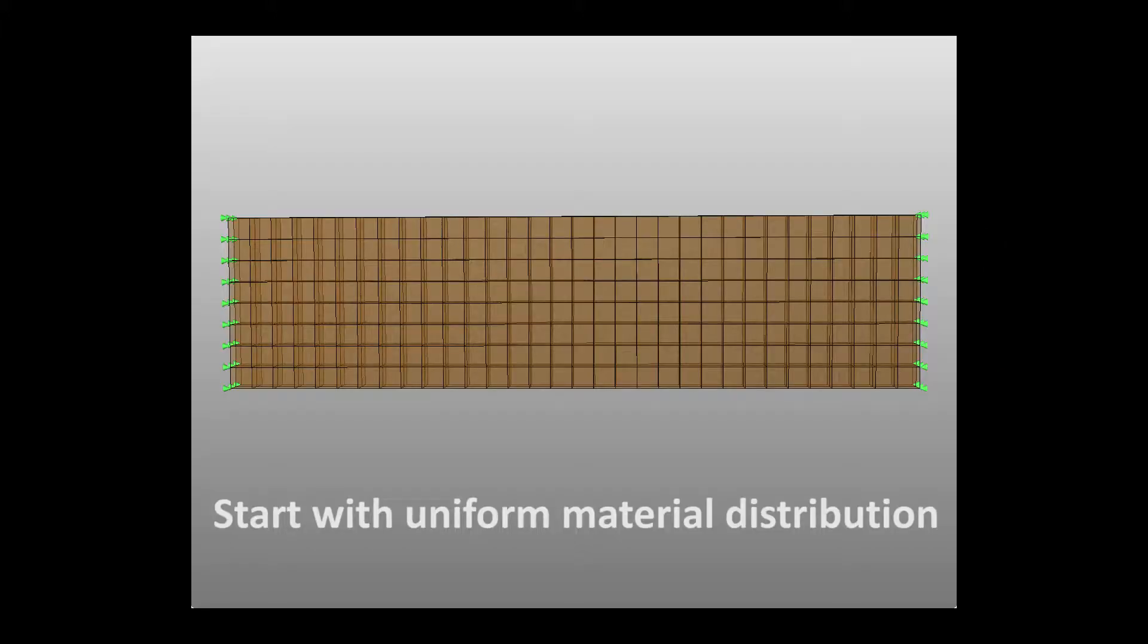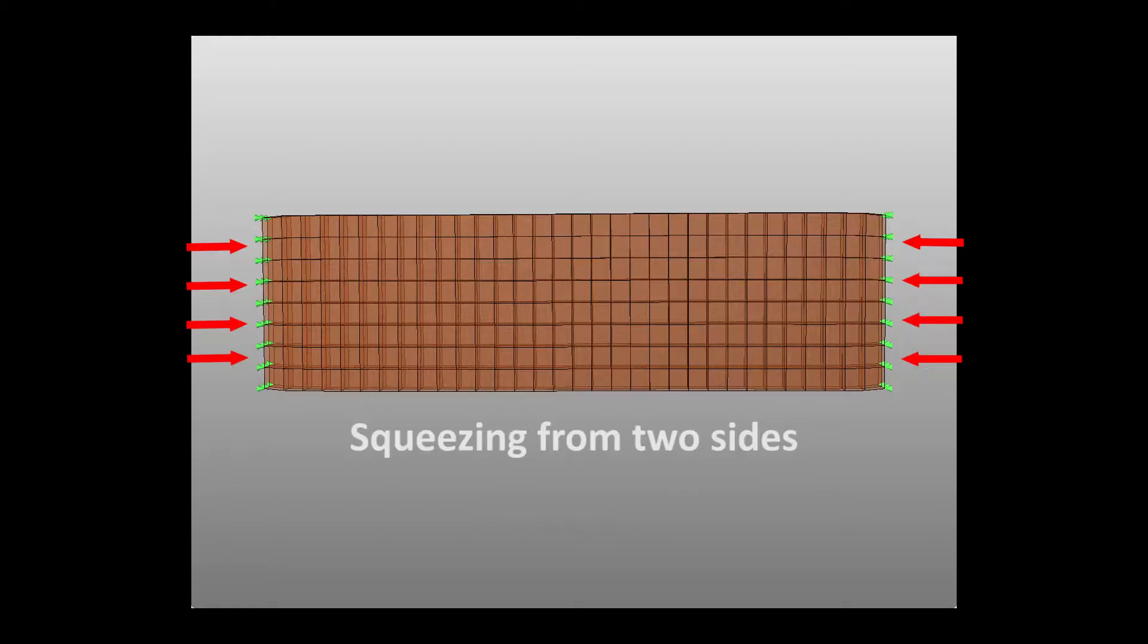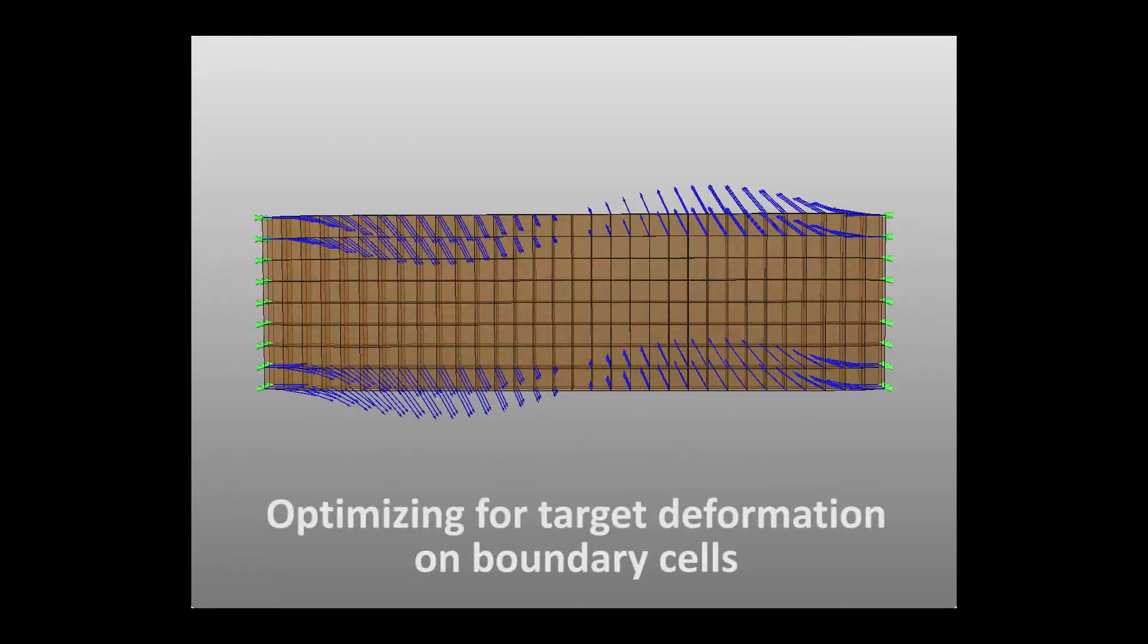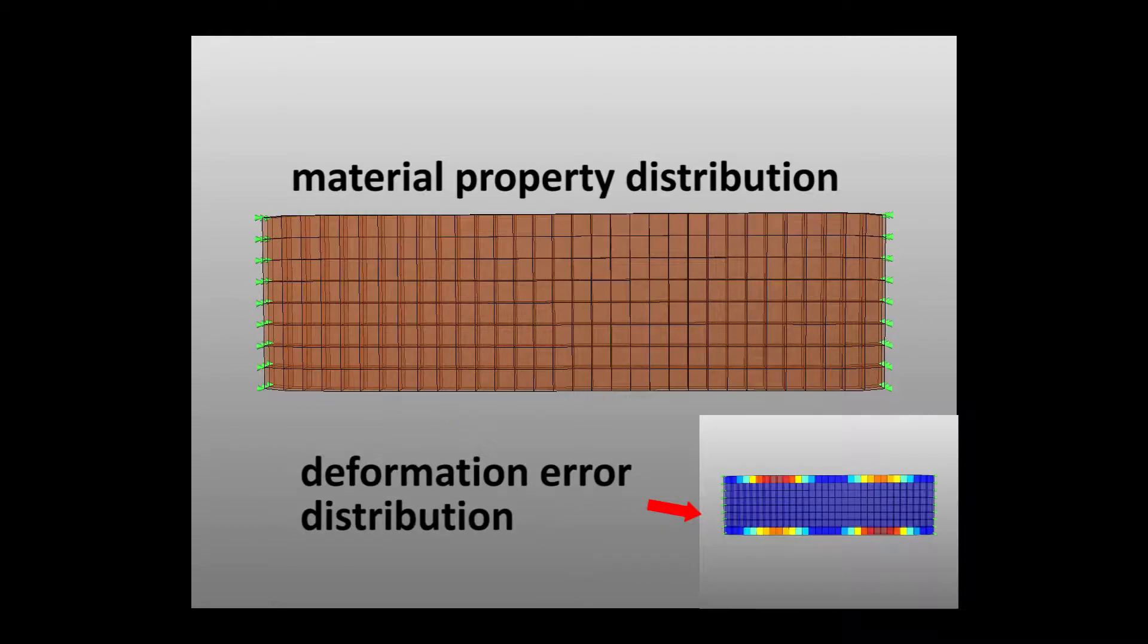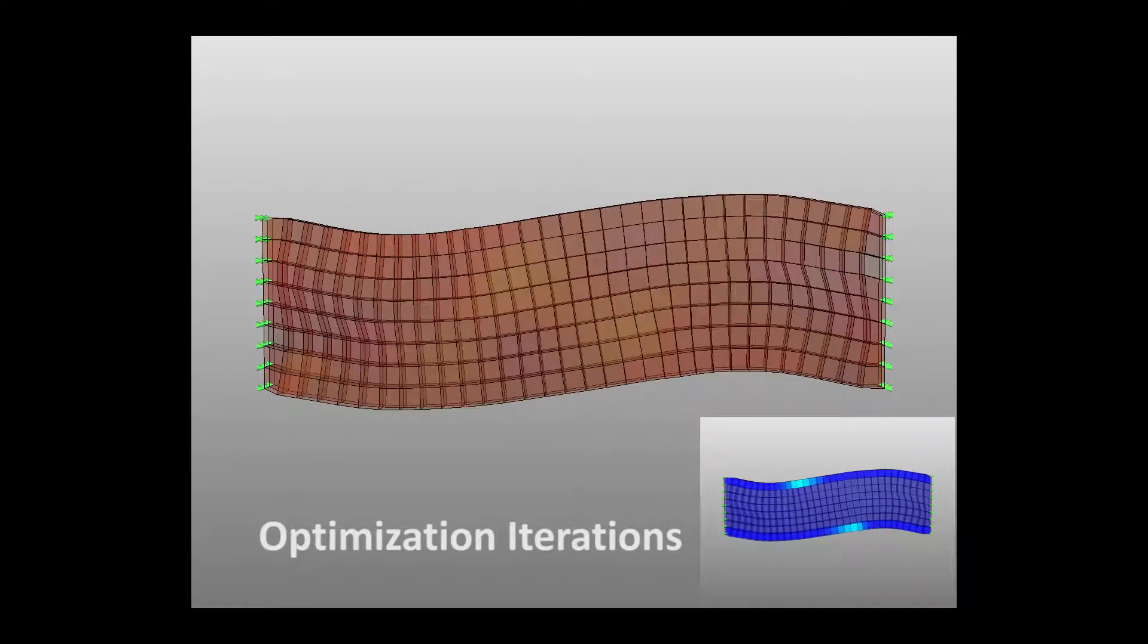We start from a uniform material distribution, stretch the two sides of the beam with external forces, and optimize the material property distribution in the object domain to achieve an S-shaped target deformation.